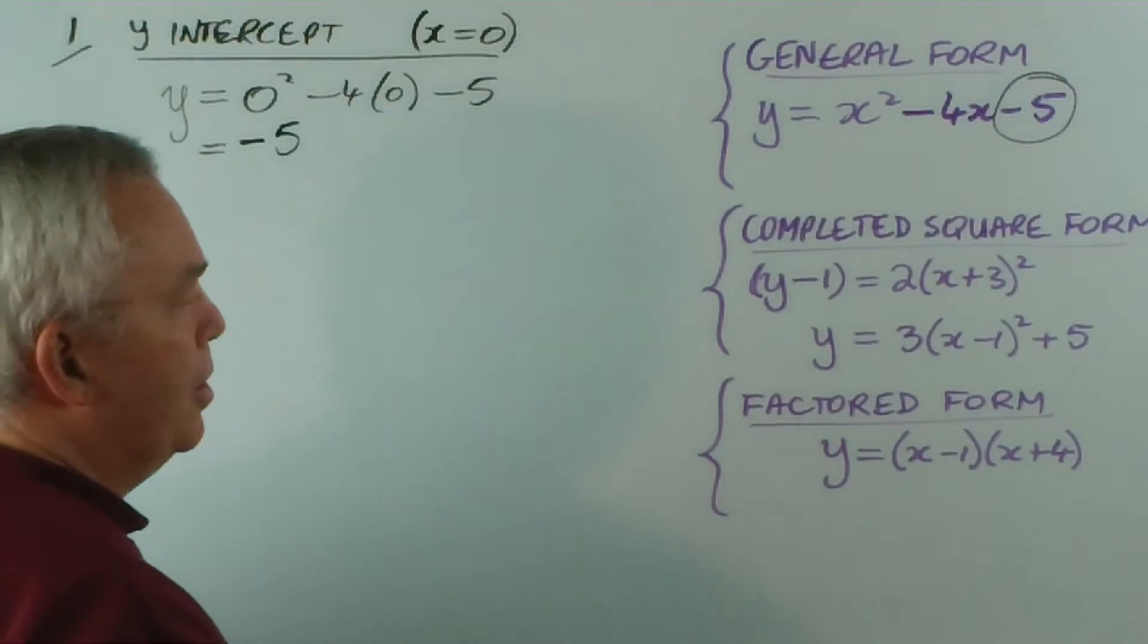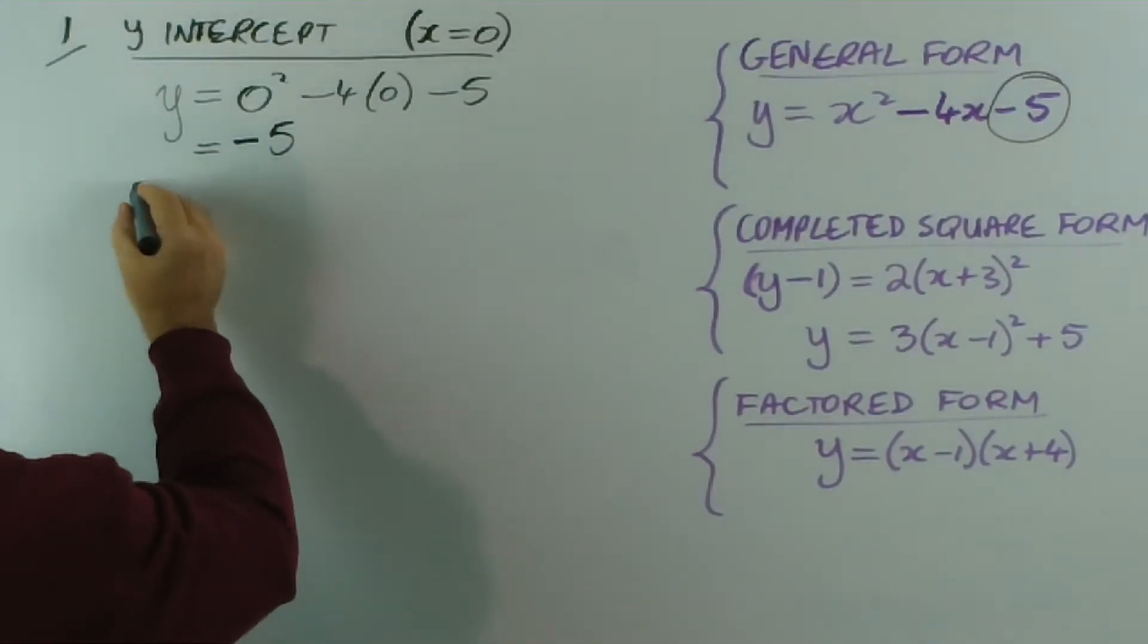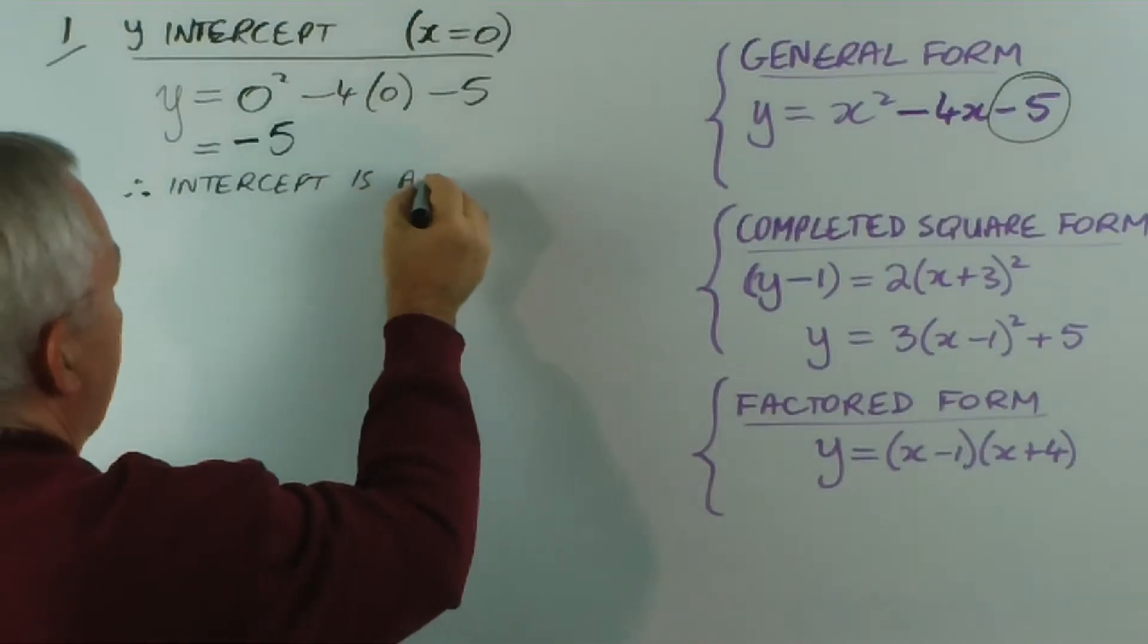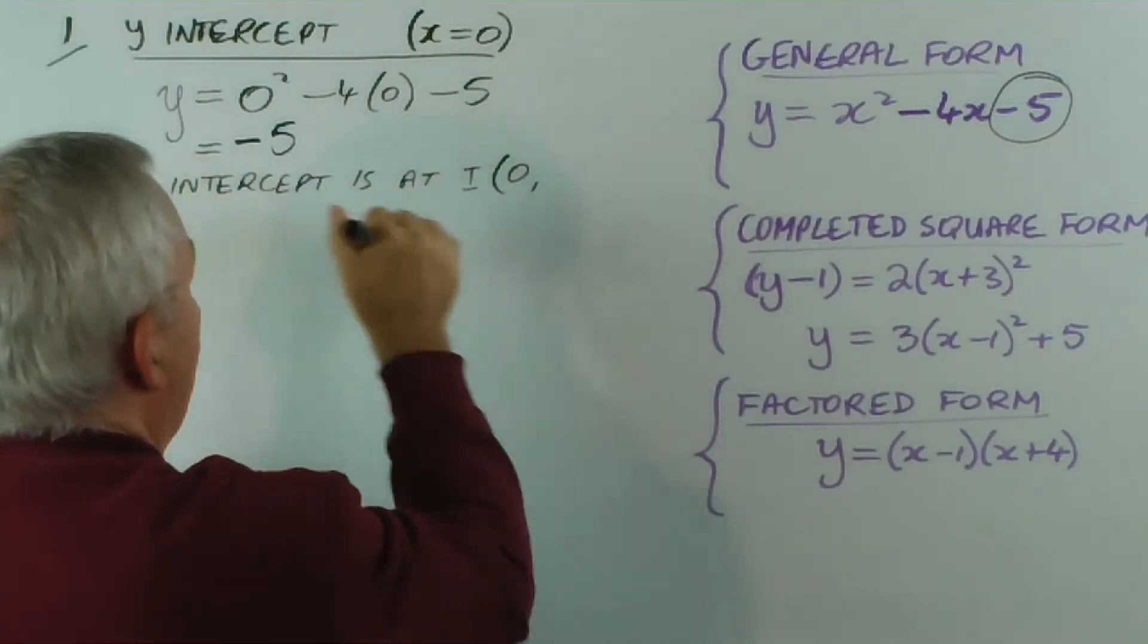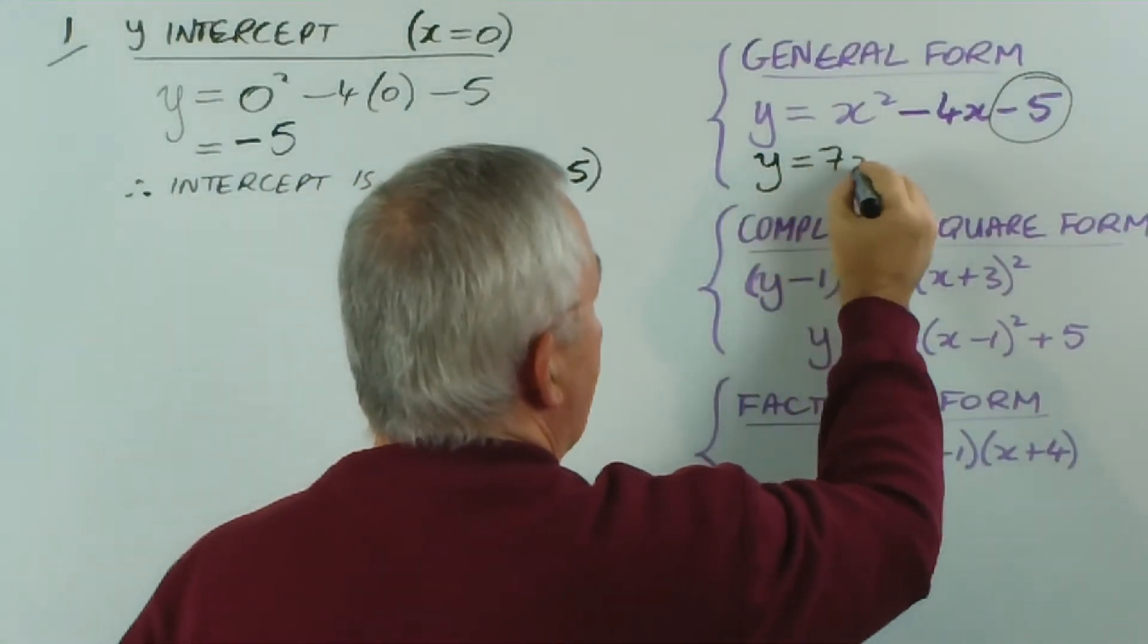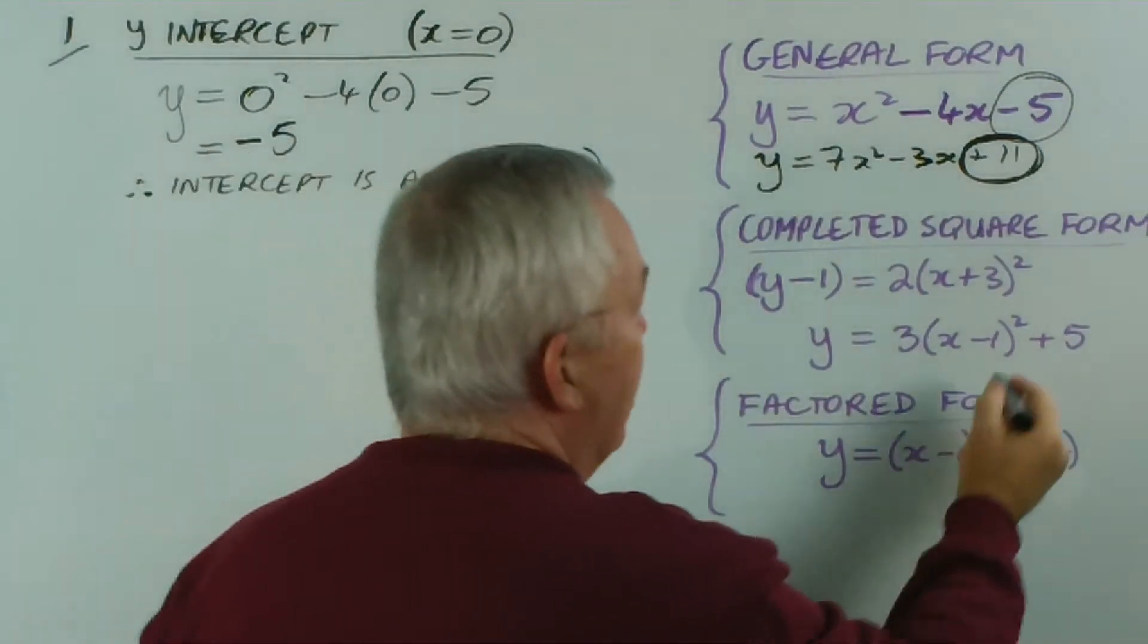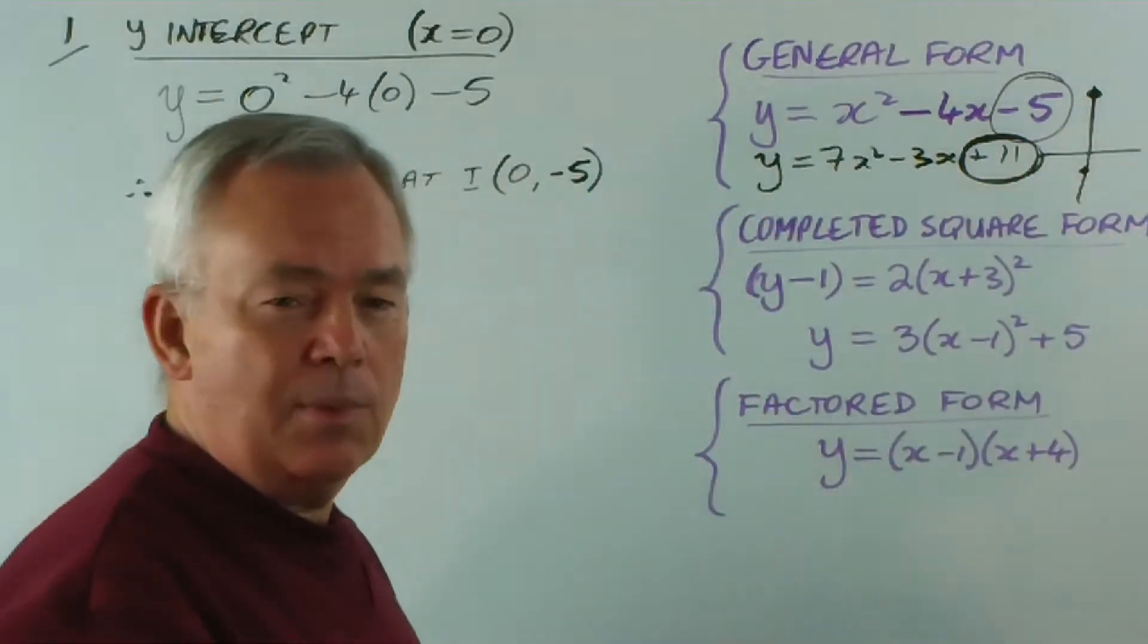Anytime you have an equation in the general form, the y-intercept will be the y-value that is the constant. So therefore the intercept is at, I use the letter i, x equals zero, that's what we required, and y equals minus five. So if I had an equation y equals seven x squared minus three x plus eleven, I know that that is the y-intercept. So when I graph the equation, it will go through plus eleven or minus five on the y-axis, as the case may be.